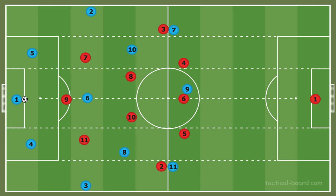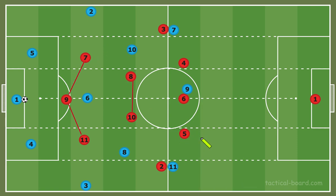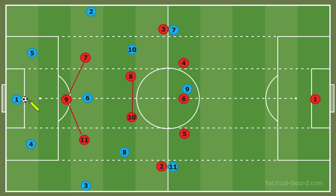I'll highlight the front five players quickly, because these are the more important players to focus on in the 5-2-3 compared to the 4-3-3. The big change is the center backs, and you'll notice that the wing backs and the positioning of the center backs become much more important in this system.